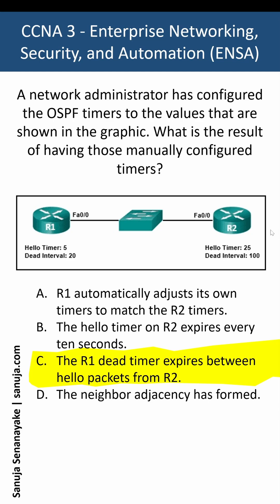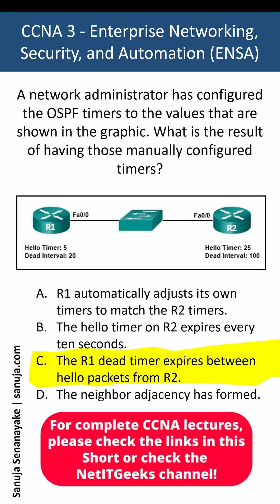The OSPF dead timer is a configurable countdown that dictates how long a router will wait to receive a hello packet from a neighbor before declaring that neighbor down and breaking their adjacency. If a router fails to receive a hello packet within the dead interval, it assumes the neighbor has failed or become unreachable, leading to increased network instability and route recalculations.